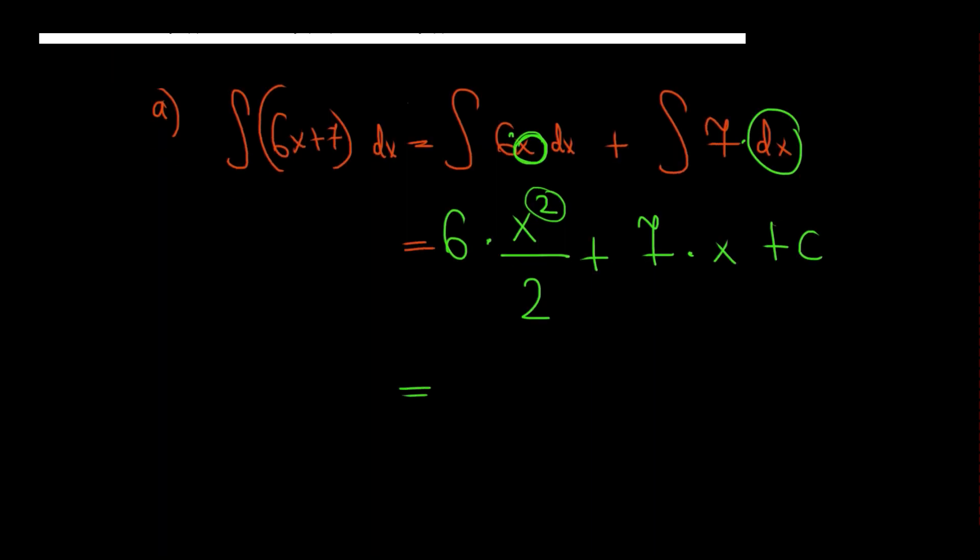In conclusion, I have 6 over 2, which is 3, 3x squared plus 7x plus c. That's the answer for part a.